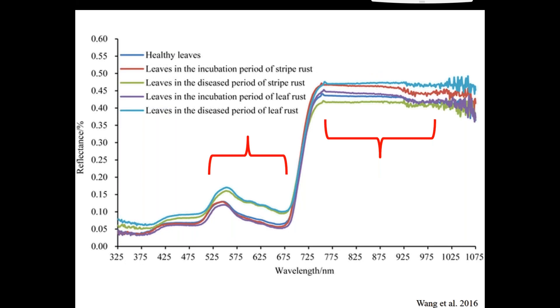Here's an interesting study looking at stripe and leaf rust in wheat. So you can see the healthy leaves, which is the dark blue, absorbing most of the visible and reflecting more of that near-infrared. Interestingly, you can see the incubation period of those rusts kind of follow suit with those reflectance lines, apart from a little bit of segregation in the near-infrared. But overall, it's kind of indicating that in the incubation period, it's not really stressing the plants that much.